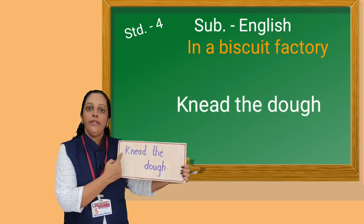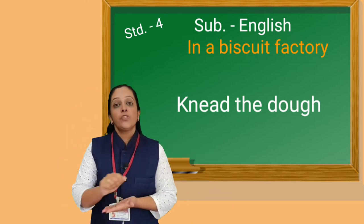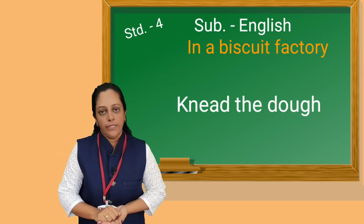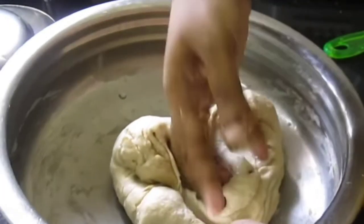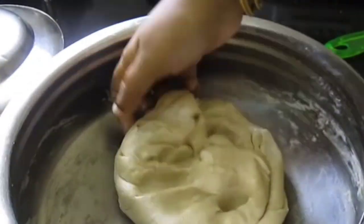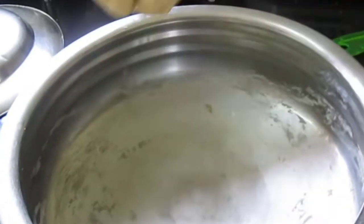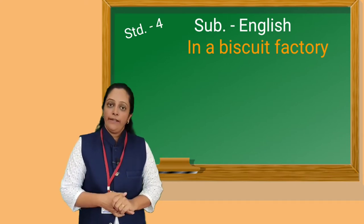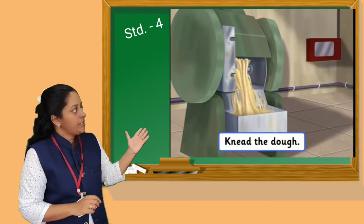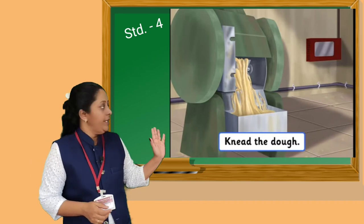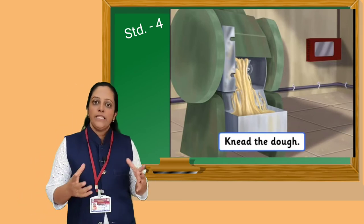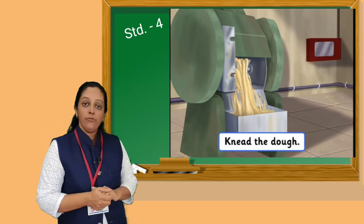Here we see the new word — knead. Knead means to press or squeeze the dough with hands. At home, we see mother mixes flour, water, salt and makes a dough, and after making a dough, she kneads that dough — means she makes that dough smooth. So in the factory, there are big machines for kneading the dough. Here is a big machine and it is kneading the dough. Kneading dough is very important because if the dough is not kneaded well, then our biscuits will become hard.